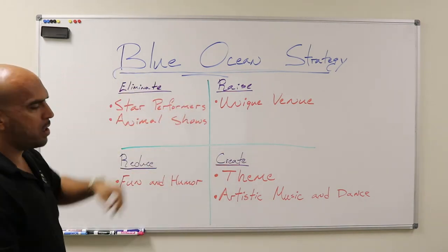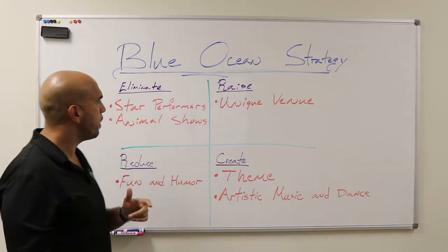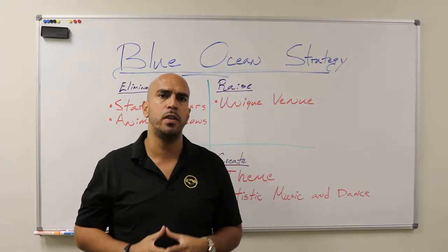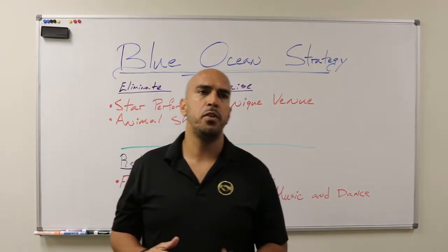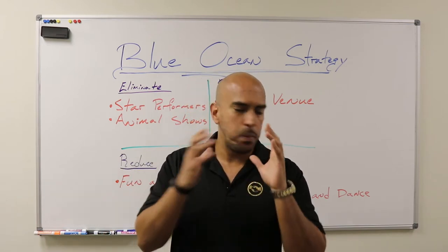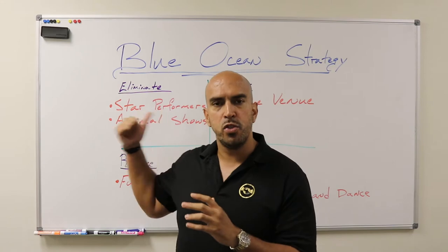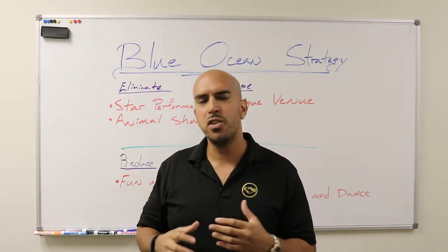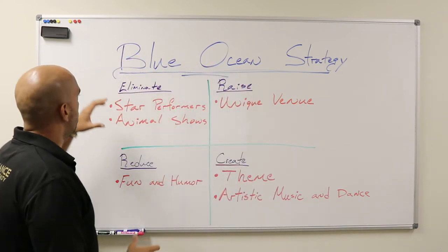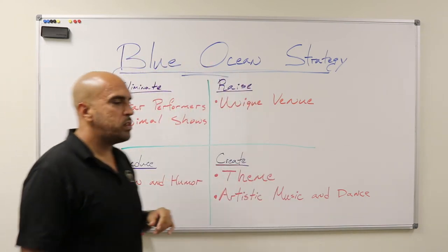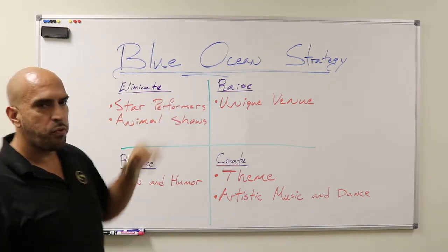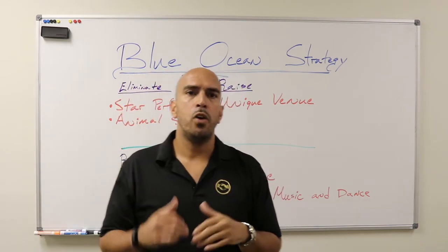So this is a quadrant - there are four things you need to think about. To help you understand, I'm going to talk about Cirque du Soleil, which performs in Las Vegas, Orlando, and around the world. The book uses Cirque du Soleil as an example, and I thought it was such an amazing example that I want to share it with you.